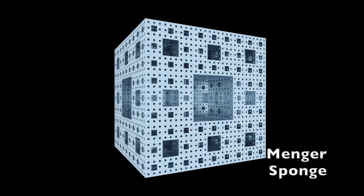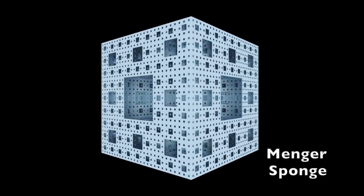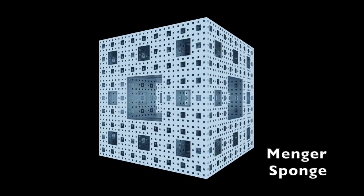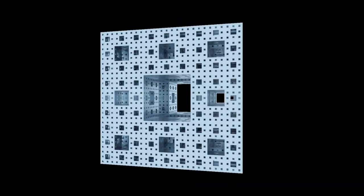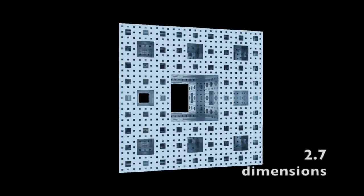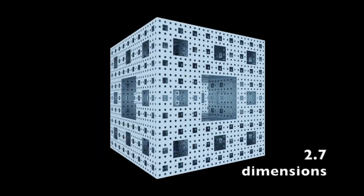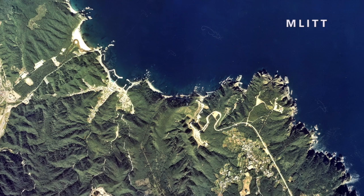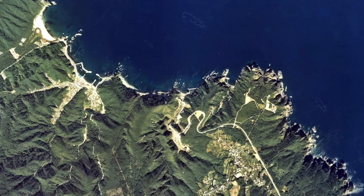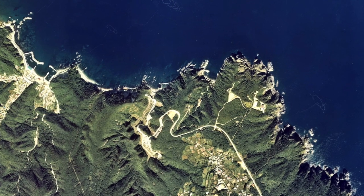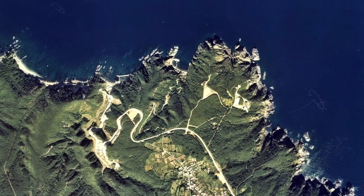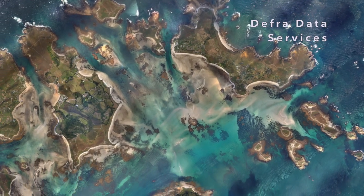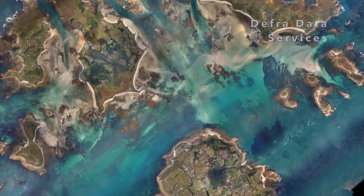Similarly, if we look at the Menger sponge, it looks kind of three-dimensional, but it actually can't be, because despite appearances it has no volume. At the same time it can't be two-dimensional, because its surface area is infinite. Consequently, it has 2.7 dimensions. What the fractal dimension is measuring is how much the degree of detail changes when we change the scale — or how many self-similar copies we get when we go from one scale to a smaller scale. As it turns out, that coastline of the British Isles has about 1.2 dimensions.